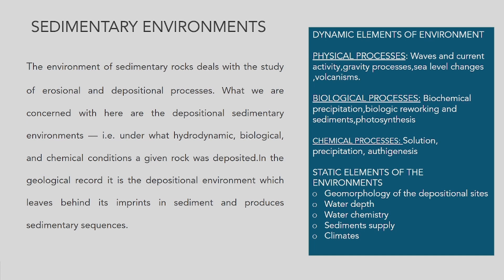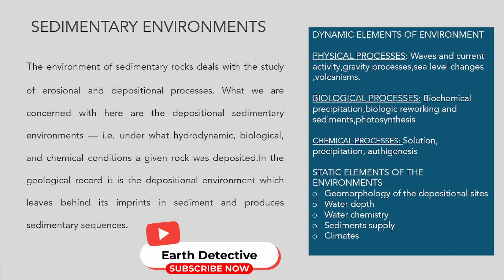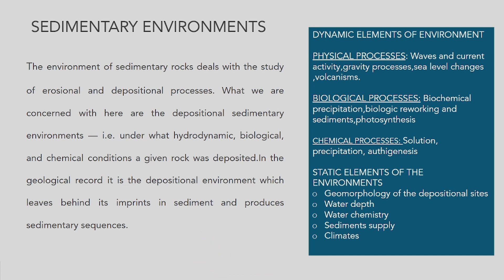For example, under what hydrodynamic, biological and chemical conditions a given rock was deposited. There are three dynamic elements of environment. Physical processes include waves and current activity, gravity processes, sea level changes and volcanism. Biological processes include biochemical precipitation, biological reworking and sediments photosynthesis.